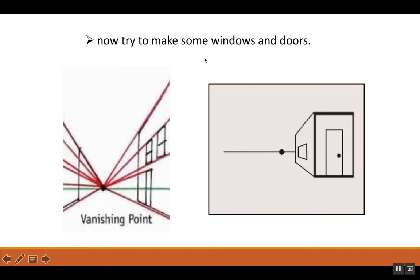Now we're going to make some windows and doors. Windows and doors are made exactly the same way as your walls. You're going to make lines that come off of the vanishing point — those will be the bottoms and tops of your windows. Then come back in with your ruler and draw vertical lines, which will be the sides of your doors and windows. To get the middle of these windows, draw another line off of the vanishing point. Everything from the vanishing point creates tops, middles, and bottoms; vertical lines form the sides.